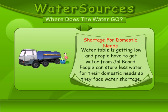Water shortage for domestic needs. The water table is getting low and people have to get water from the Jal Board. People can store less water for domestic needs, so they face water shortage.